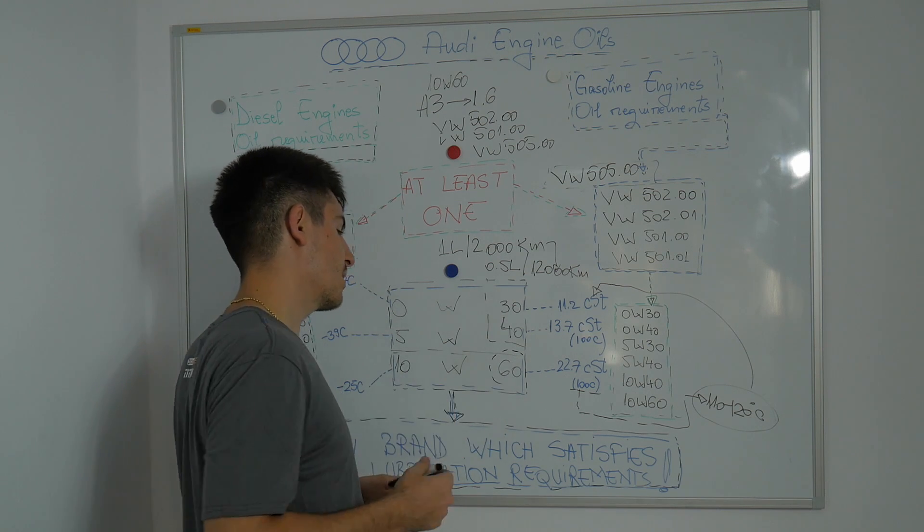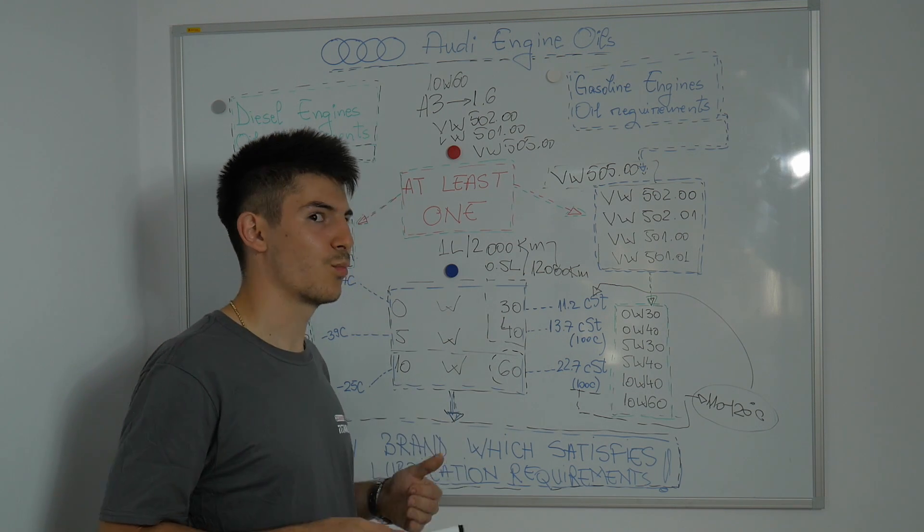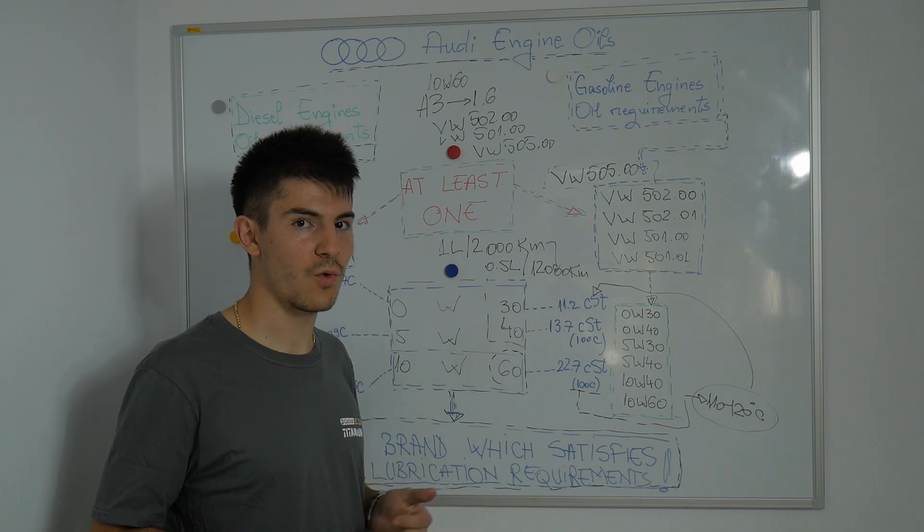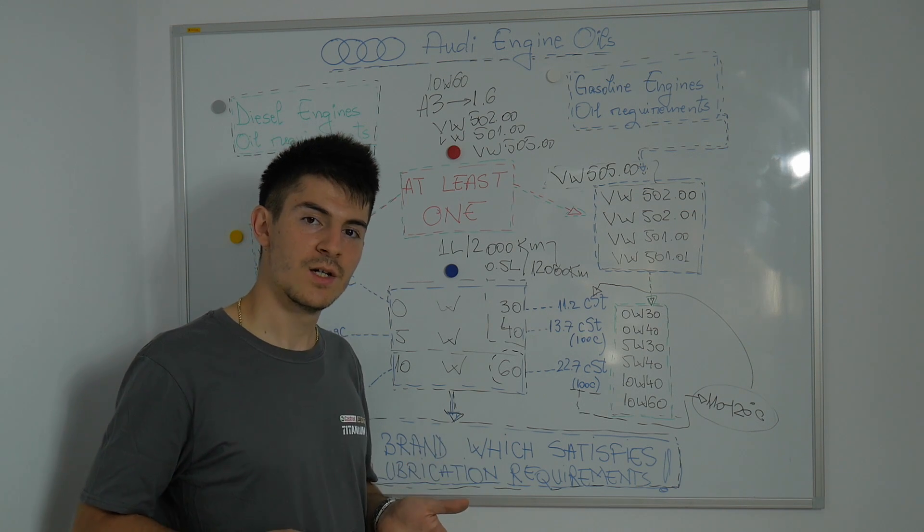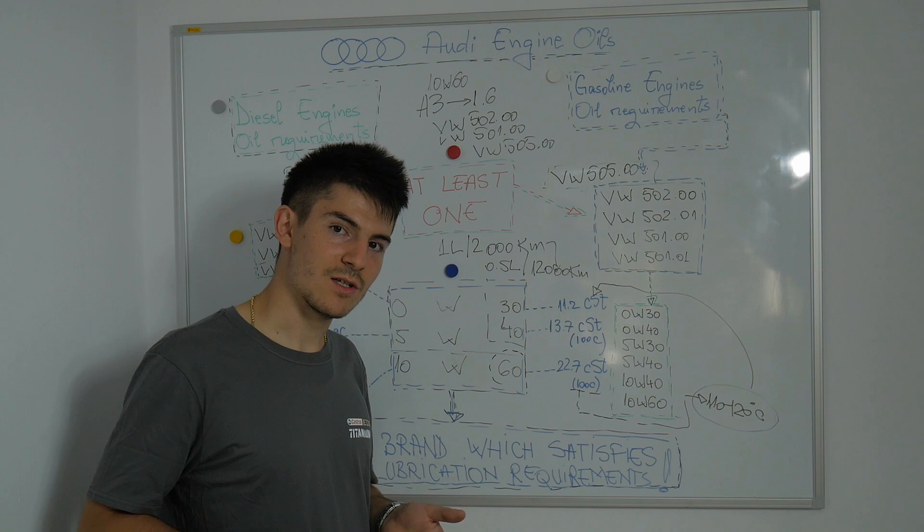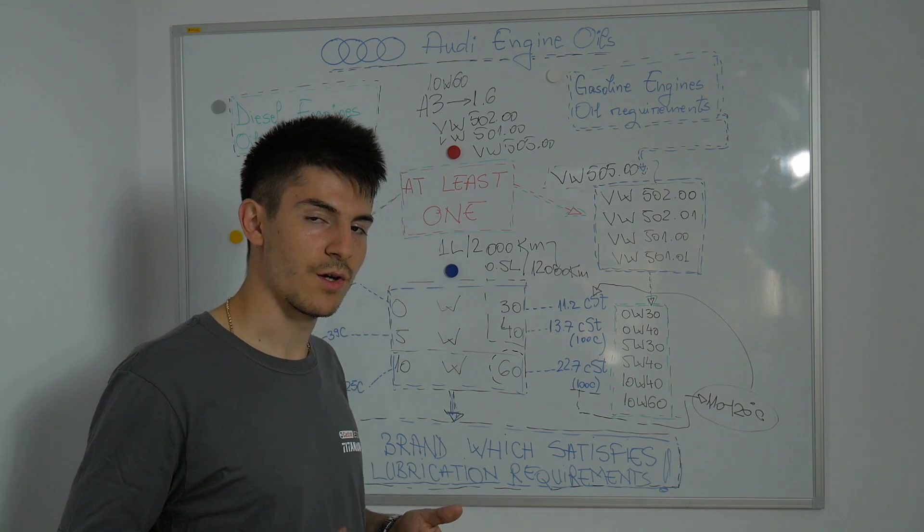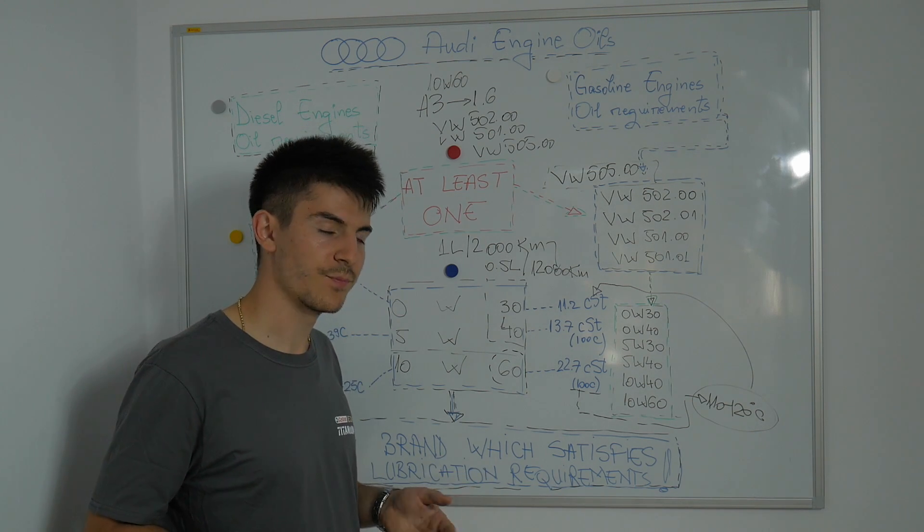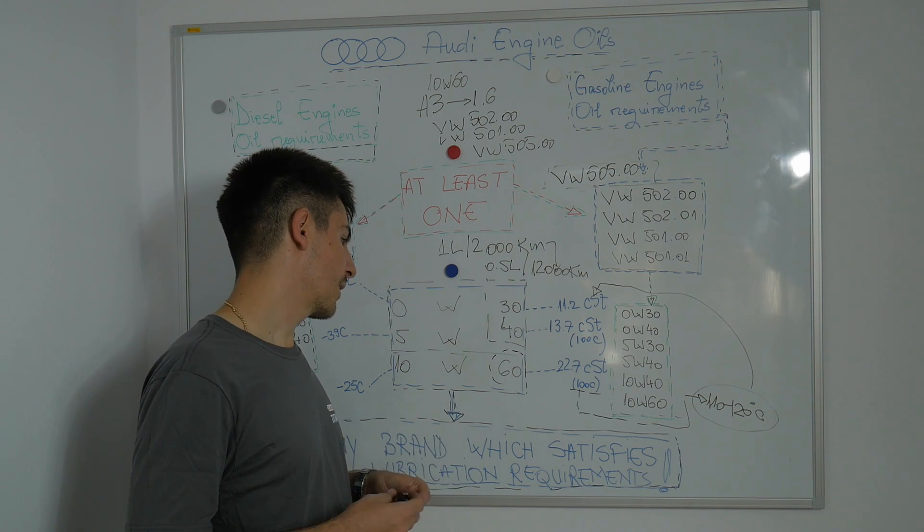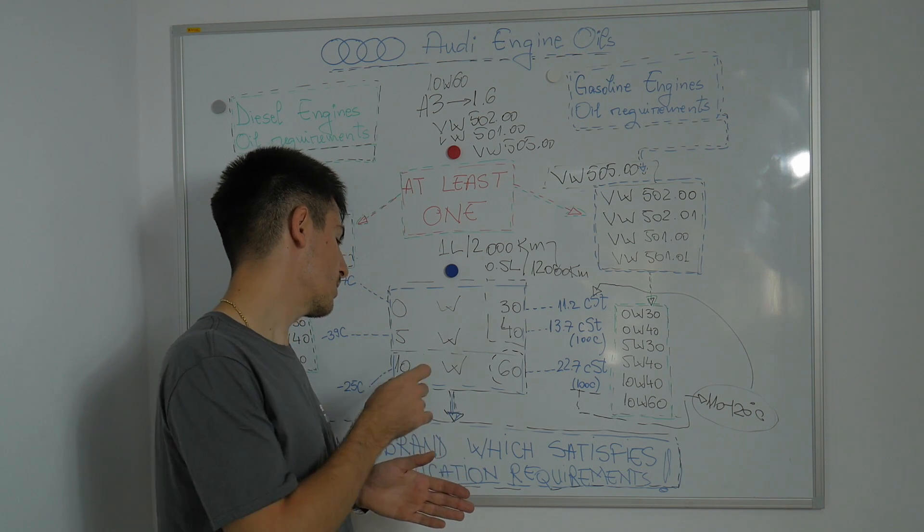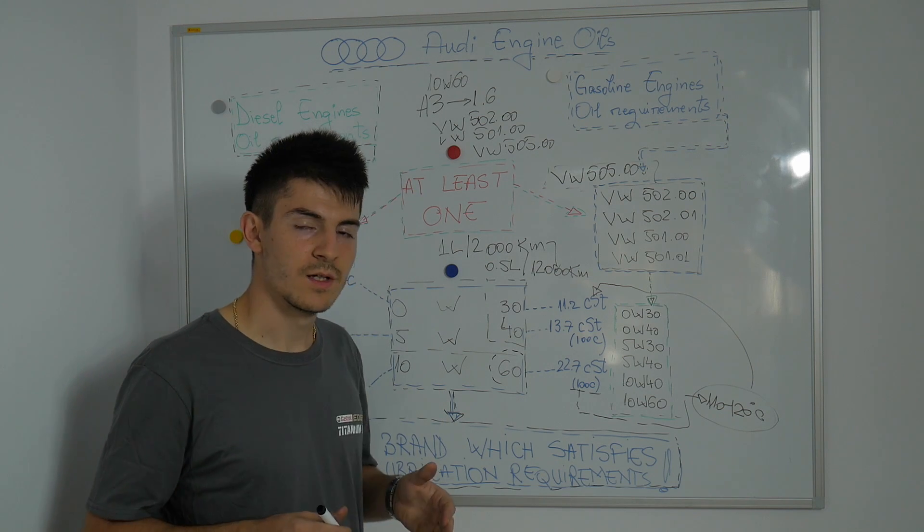Where you can't use the 10W-60: you can't use this in the 1.2 or 1.4 or 1.0 turbocharged gasoline engines currently used on the A1 and A3. The oil is too thick and this oil isn't approved for these engines.